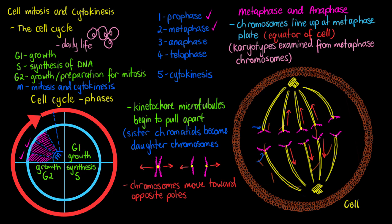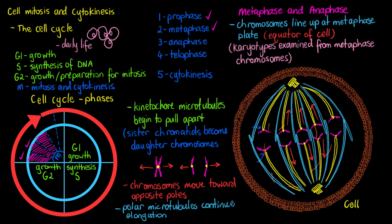The last thing we'll see happening in anaphase is that all of our polar microtubules of the mitotic spindle continue to elongate. All of those microtubules — the kinetochore microtubules and the polar microtubules — are all part of our mitotic spindle, and they're going to be pushing the cell apart. That concludes anaphase. We've only got one step left in mitosis before we get to cytokinesis and conclude our M phase of the cell cycle. In the next video we'll talk about telophase, and I hope this video has been helpful to you.